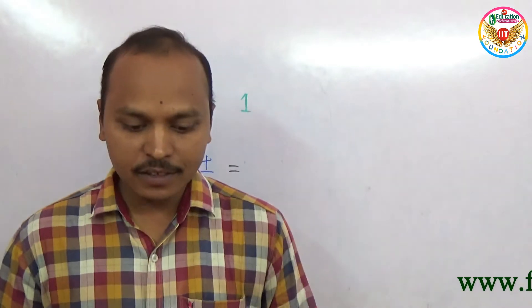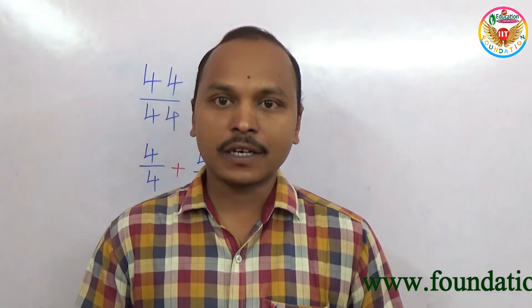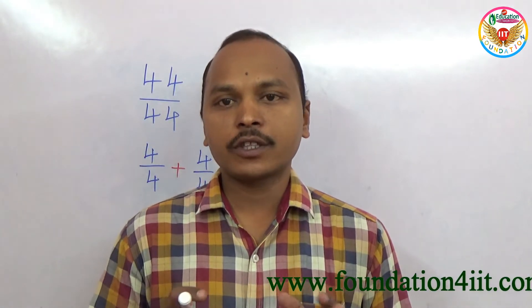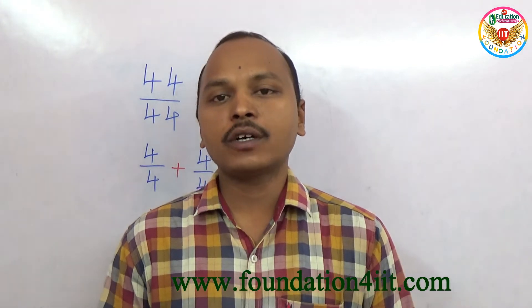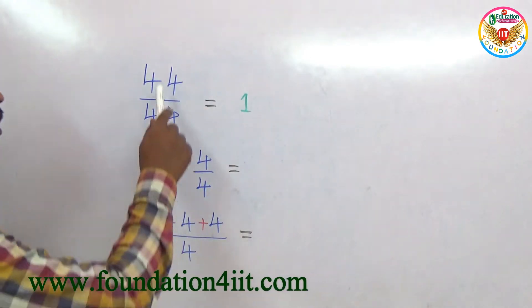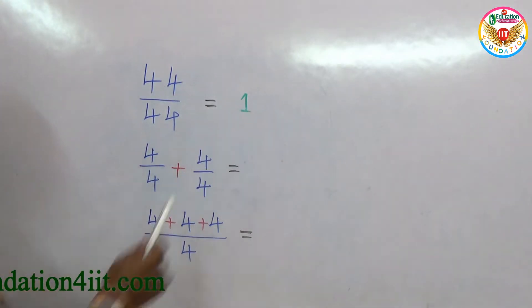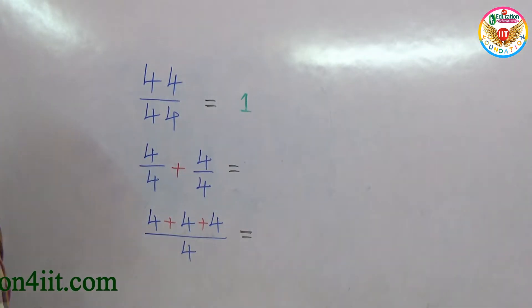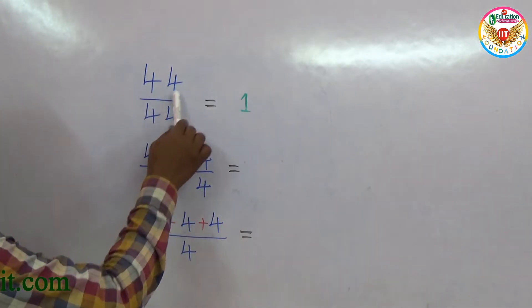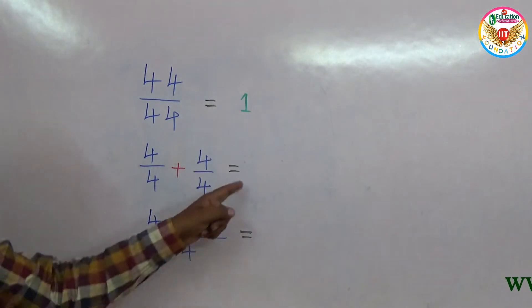Welcome to the educational channel. In this video I will show some tricks with numbers. The question is about the four fours — how to represent all the single digits. For example, four fours can be made equal to one: 44 divided by 44 equals one.